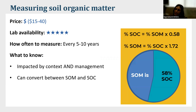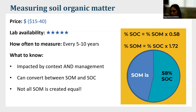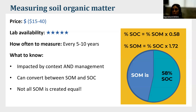Soil organic matter is roughly 58% organic carbon, so if you have one measurement you can quickly convert back and forth between them — you don't need to pay for both. Not all soil organic matter is created equal, because it has different pools or bins where carbon can be stored for variable lengths of time. Because of this, there are a lot of new measurements aimed at describing those different pools, how much carbon is in them, and how long it will last.